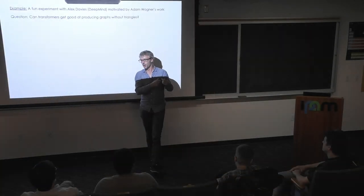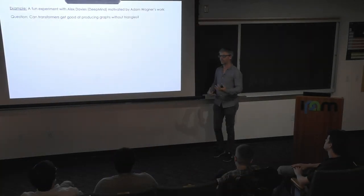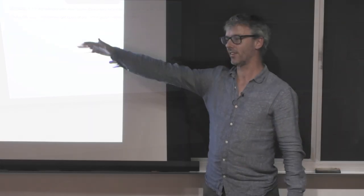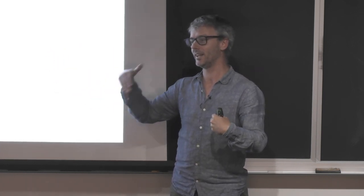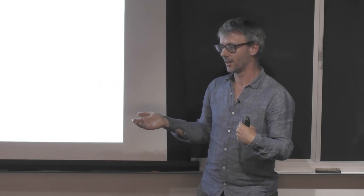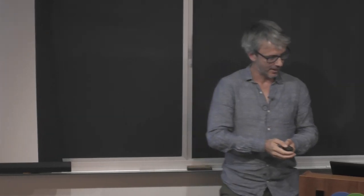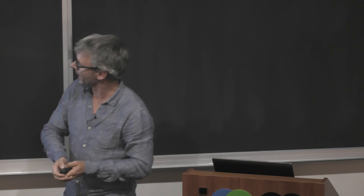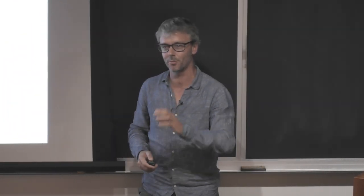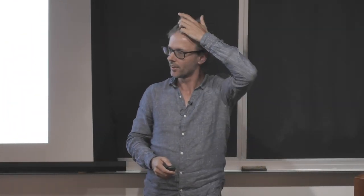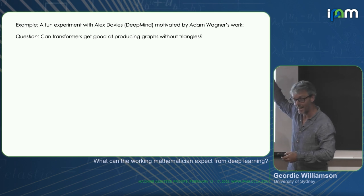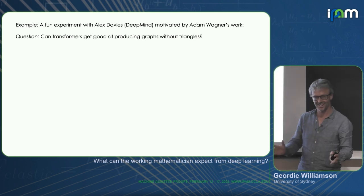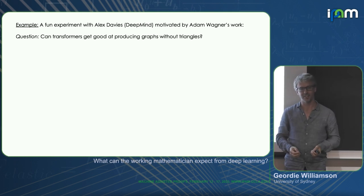And the issue there is the attention mechanism is the fact that what you've just said, there's aspects that may be irrelevant and there's aspects that are very important. It's an architecture, it's basically a sequence to sequence architecture. A transformer takes in sequences and spits out sequences, originally designed for machine translation. But it's turned out to be an incredibly versatile architecture. But I really don't want to go into transformers because that would be probably half an hour lecture. But anyway, transformer is something and we can ask, can it get good at producing graphs without triangles?